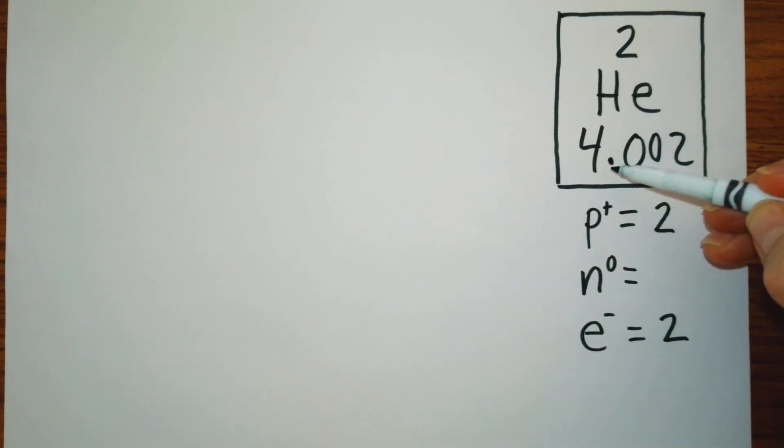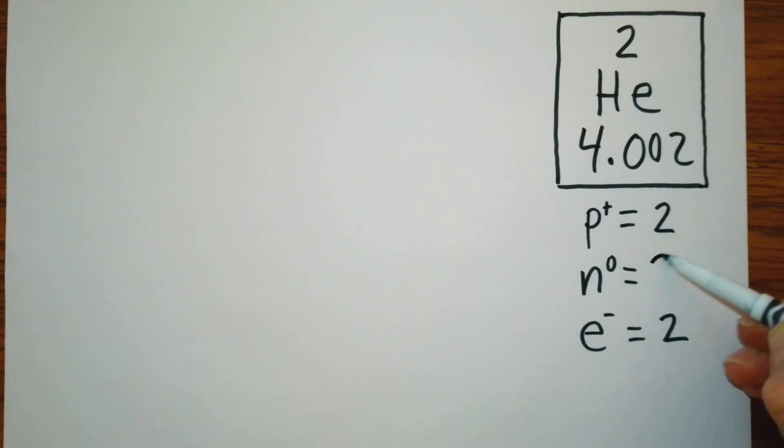To determine our neutrons, we'll take four, we'll round it up to a whole number, four minus two, which also gives us two.